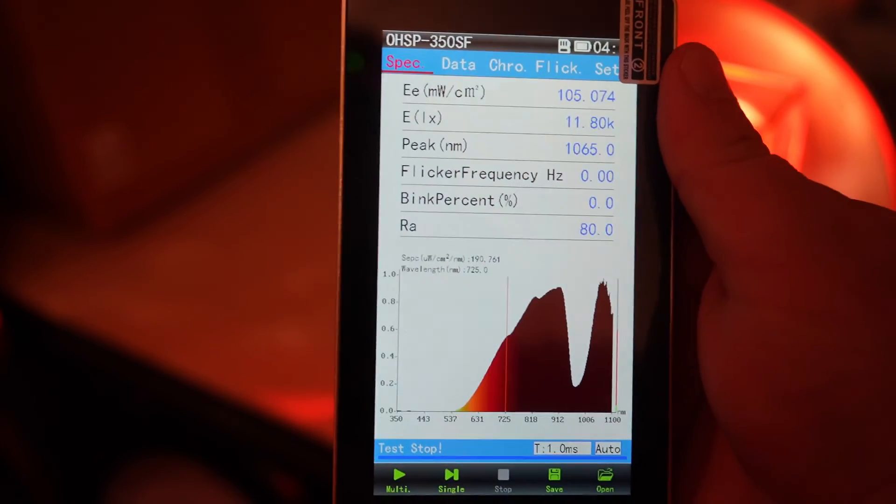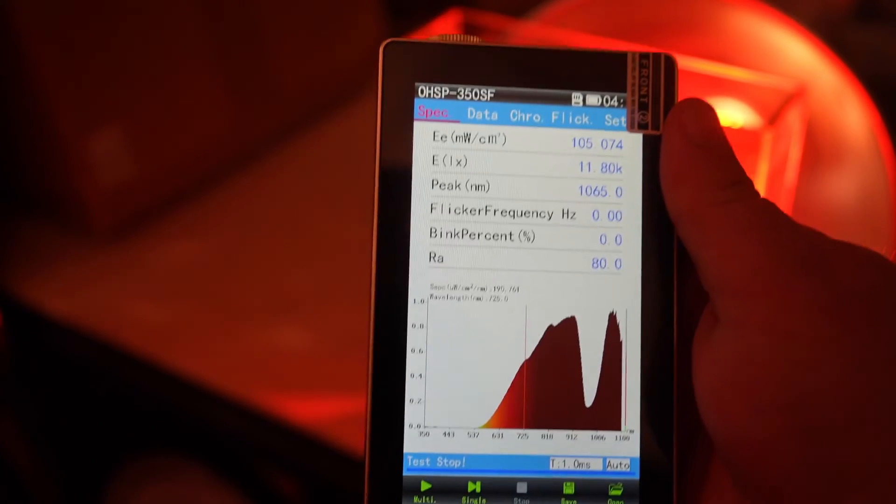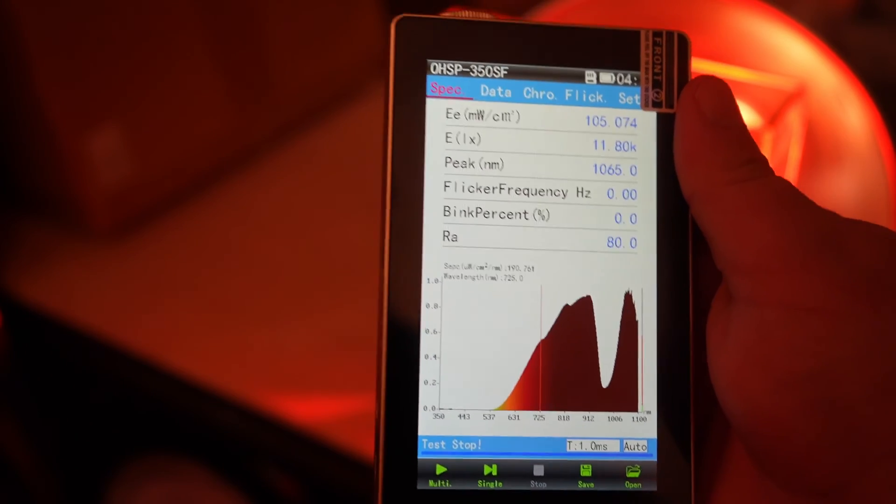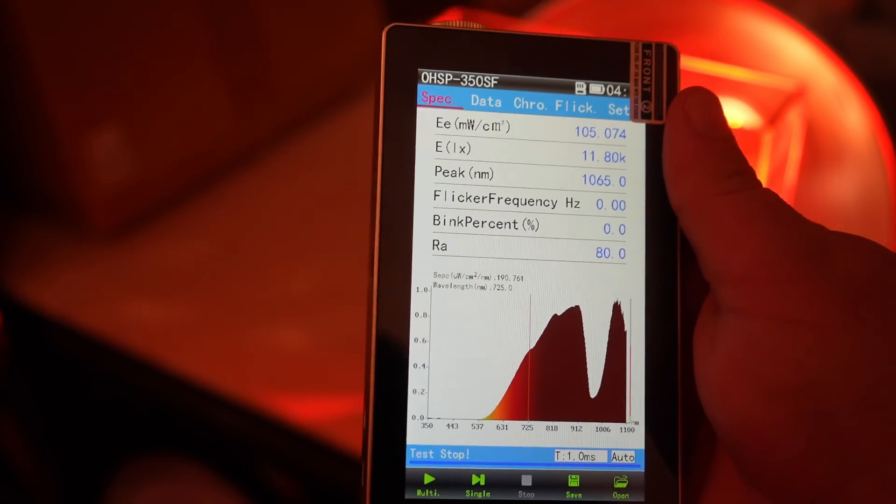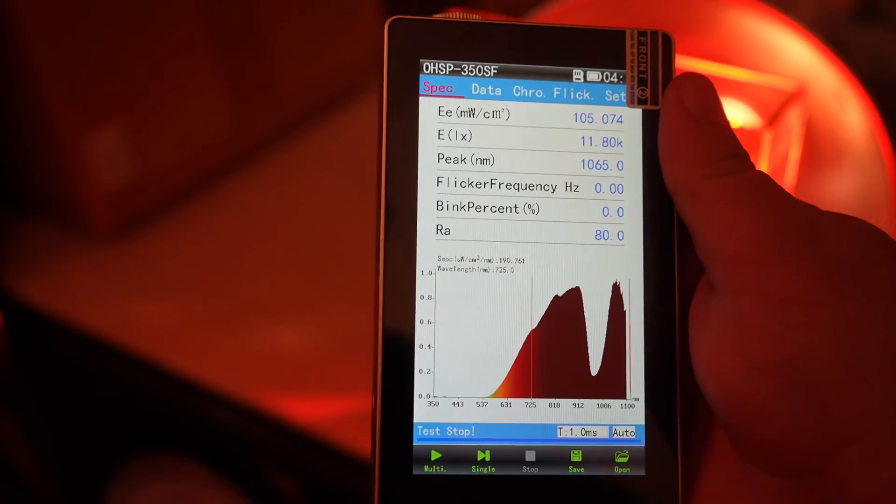And here we go, we get 105 milliwatts per centimeter squared through the glass ball, which you can press into the skin and get that deeper penetration and really optimize. If you want those deep penetrating wavelengths of 810, 830, 1060, then you really need that skin compression to really optimize it.